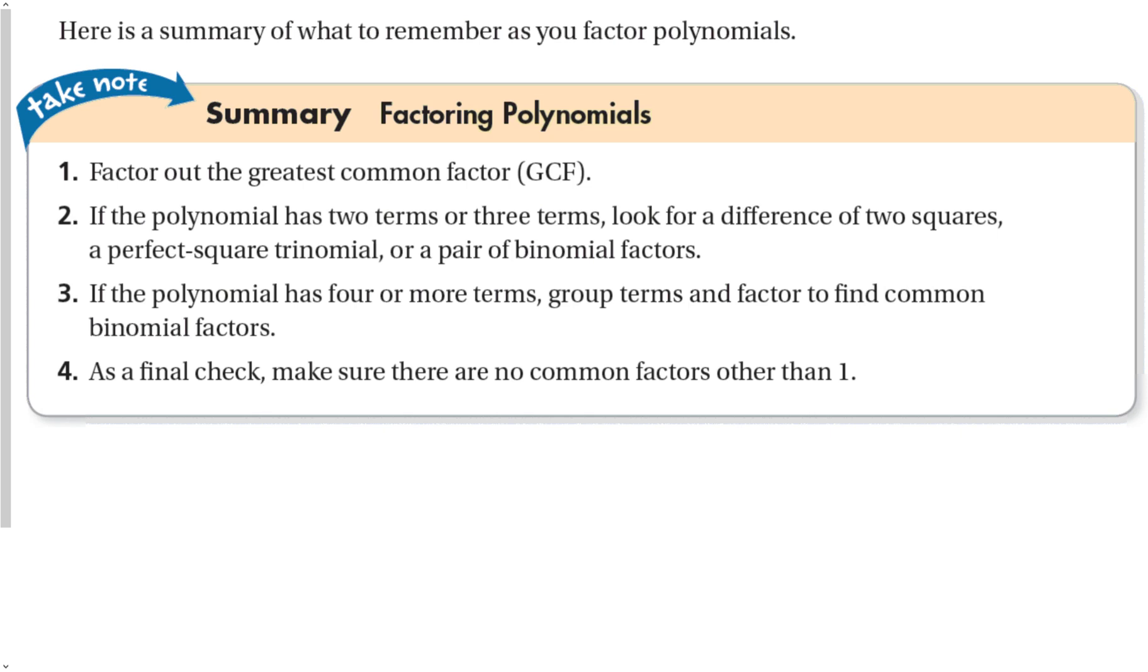So here's a summary of what to remember as we factor polynomials. First step. Factor out the greatest common factor, the GCF. Make the problem easier on yourself. Take anything that you can take out.